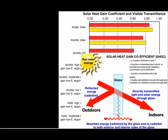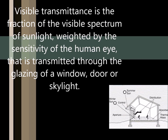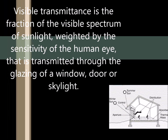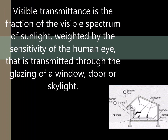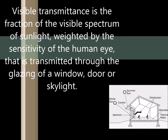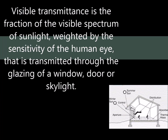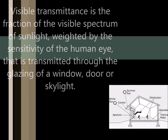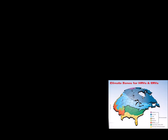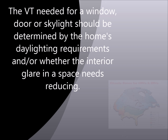Next we look at sunlight transmittance. The ability of a window, door, or skylight to transmit sunlight into a home can be measured and rated according to the following energy performance characteristics. Visible transmittance is the fraction of the visible spectrum of sunlight between 380 and 720 nanometers, weighted by the sensitivity of the human eye, that is transmitted through the glazing of a window, door, or skylight. A product with a higher VT transmits more visible light, and VT is expressed as a number between 0 and 1. The VT needed for a window, skylight, or door should be determined by the home's daylighting requirements and/or whether interior glare in a space needs reducing.